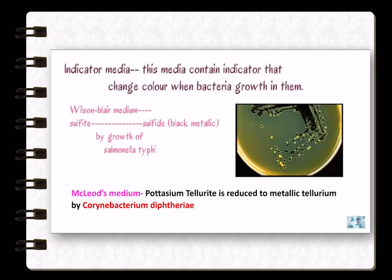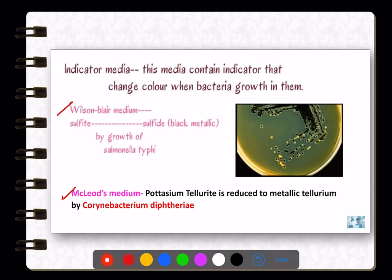Moving on to indicator media — the media contains a color indicator that changes color when bacteria grow. Examples are Wilson Blair medium and McLeod's medium. In Wilson Blair medium, growth of Salmonella typhi converts sulfite to sulfide, producing black metallic colonies. In McLeod's medium for Corynebacterium diphtheriae, potassium tellurite is reduced to metallic tellurium, causing a color change.